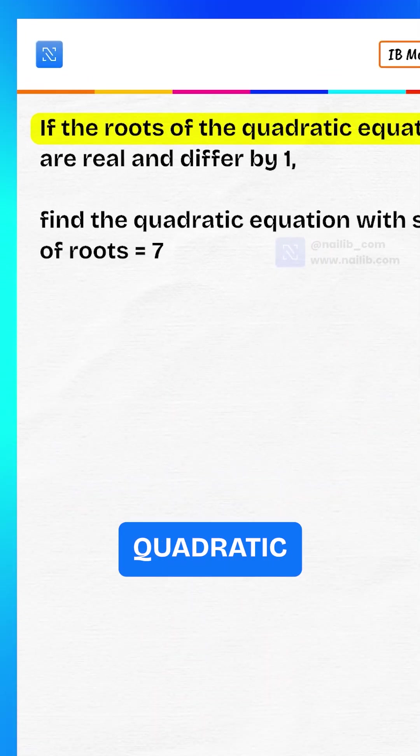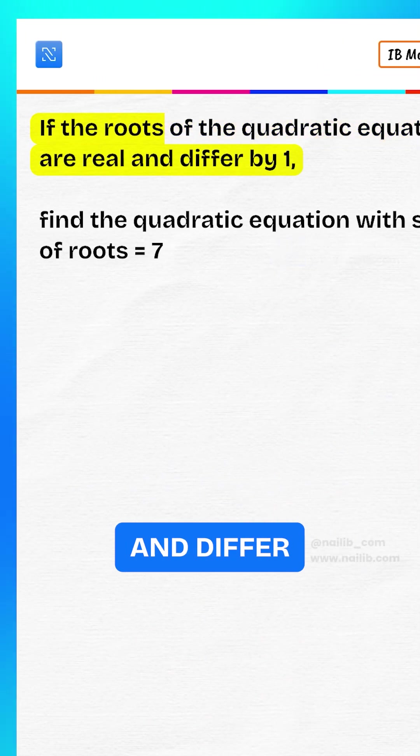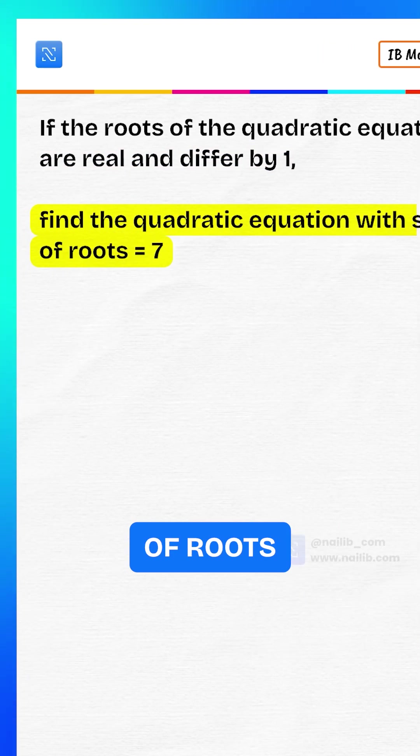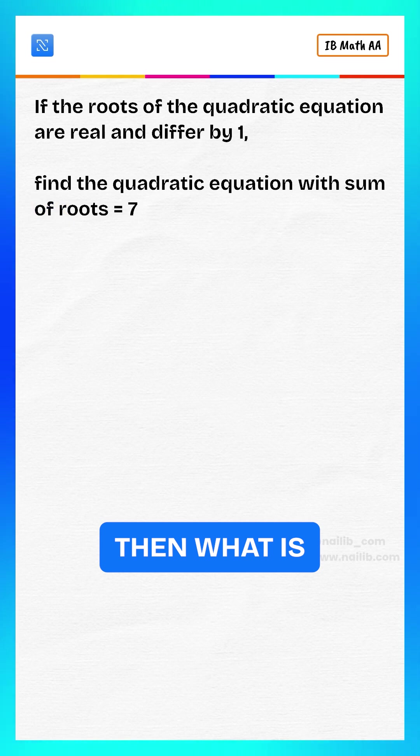If the roots of a quadratic equation are real and differ by 1, find the quadratic equation with sum of roots equals 7. Then what is the equation?